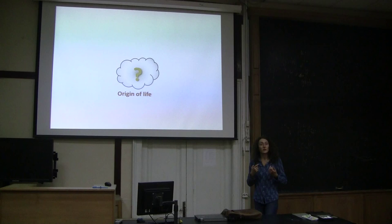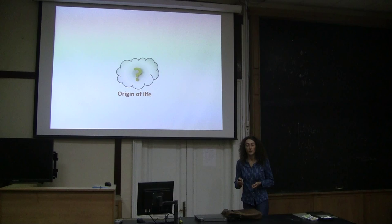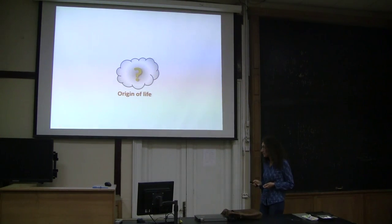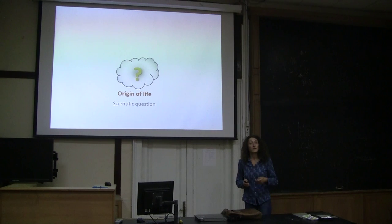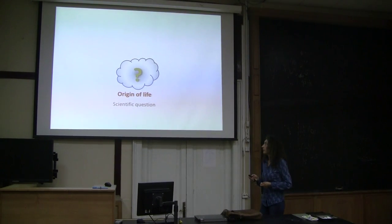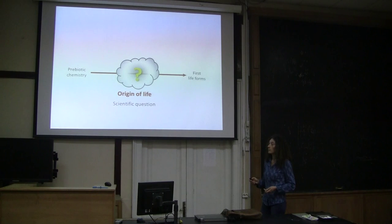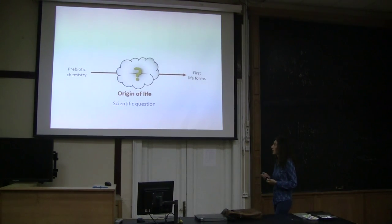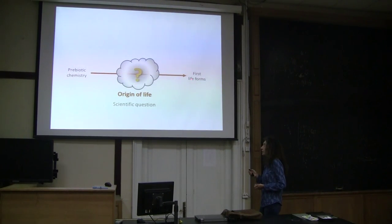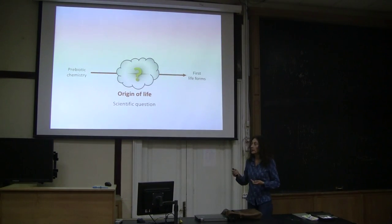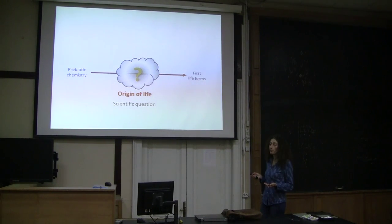So what can we say about the question of the origin of life? The first thing we as scientists have to say is that this is a scientific question, meaning that as naturalists we think that life evolved from its biochemical roots, from prebiotic chemistry to the simplest life forms by a natural process with increasing complexity.